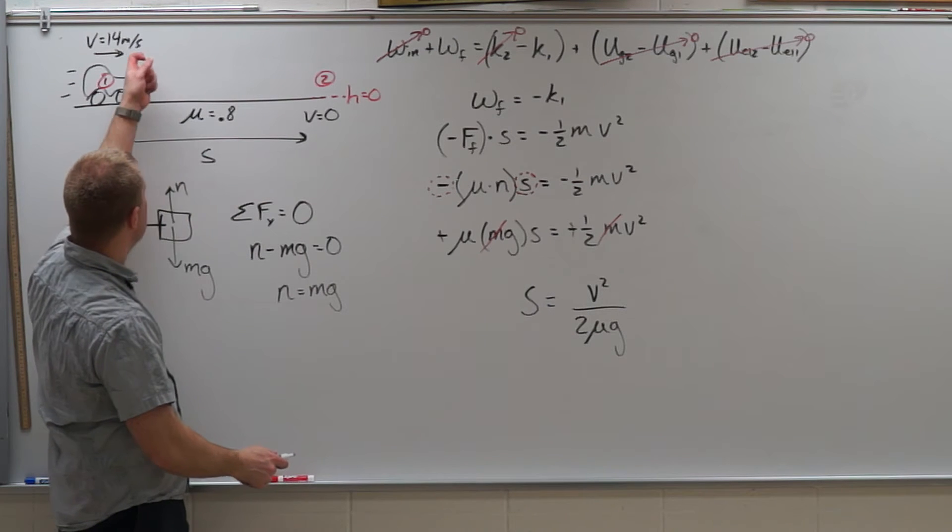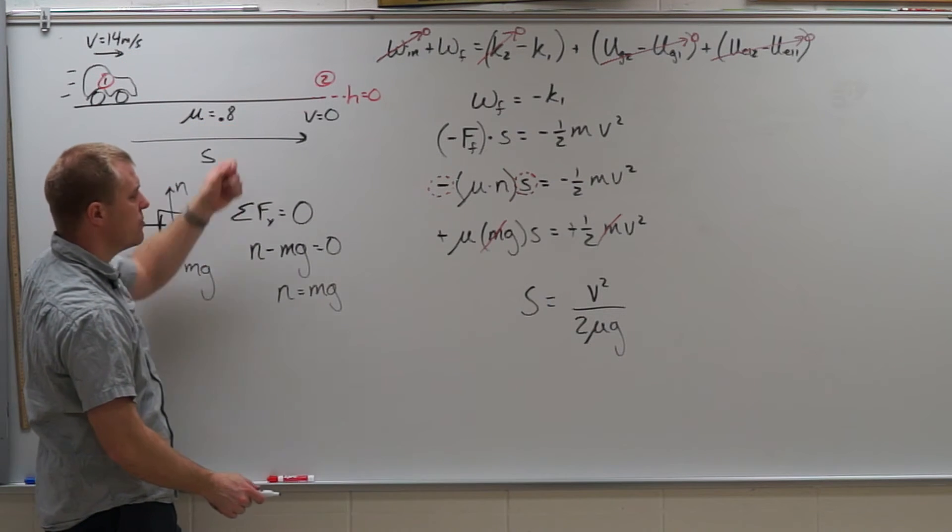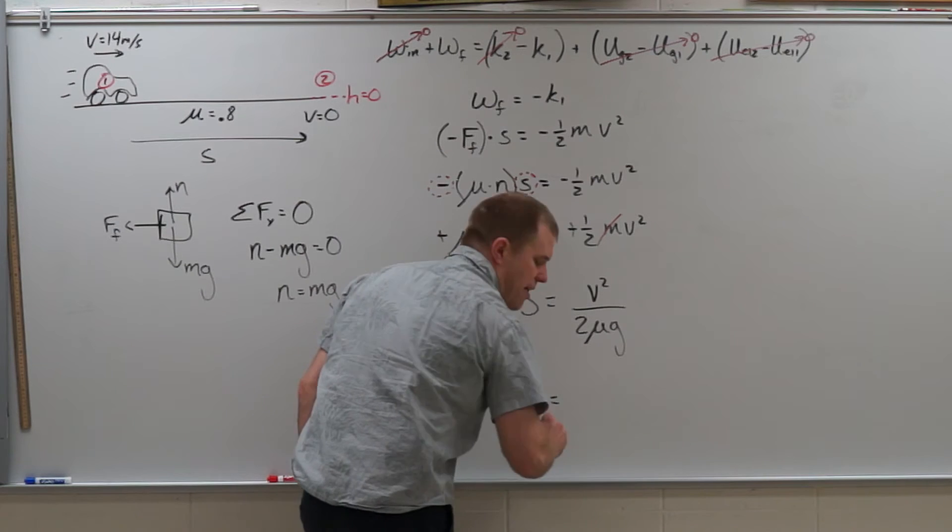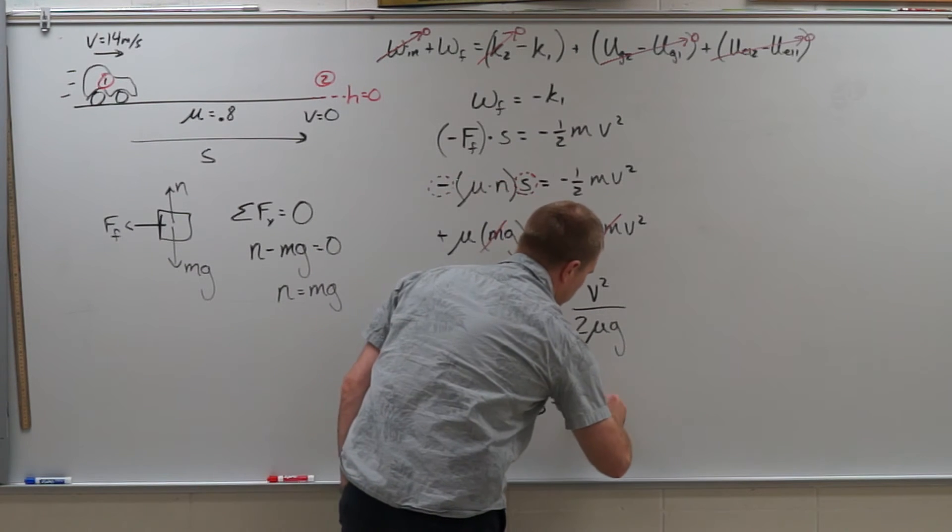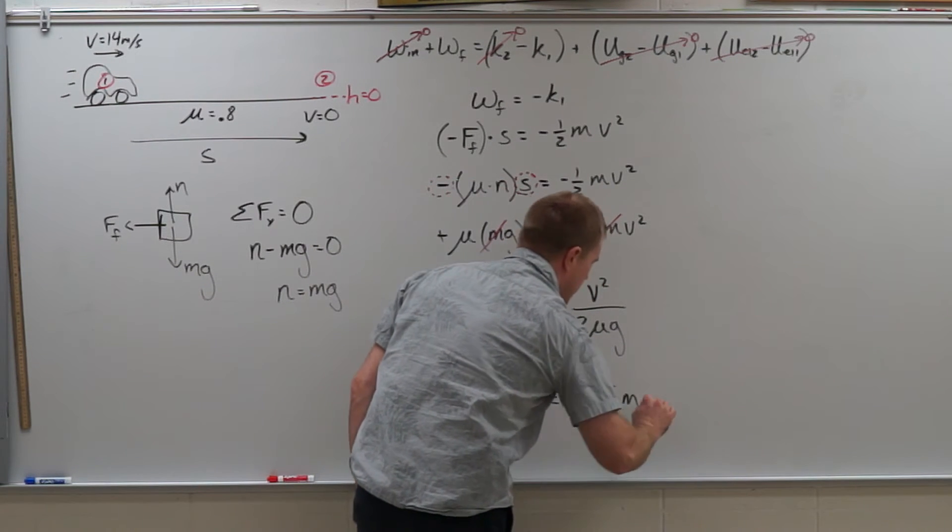So in our case of a 14 meter per second car with a coefficient of friction of 0.8, my distance traveled is going to be 12.5 meters.